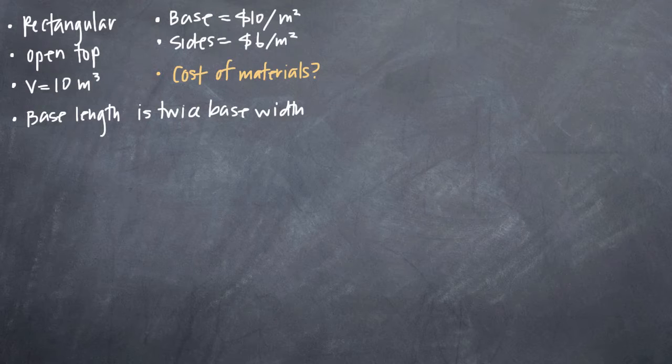we've been told that a rectangular storage container with an open top has a volume of 10 cubic meters. We've also been told that the length of its base is twice the width of the base. Given that the cost of the material we need to build the base is $10 per square meter, and that the cost of the material we need to build the sides costs $6 per square meter,